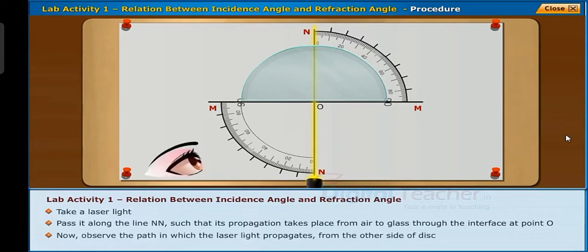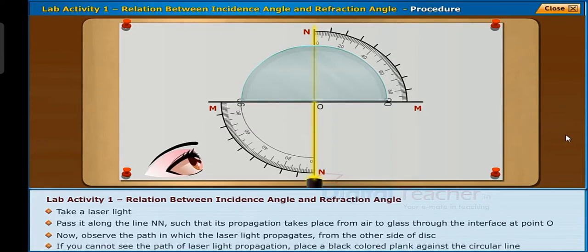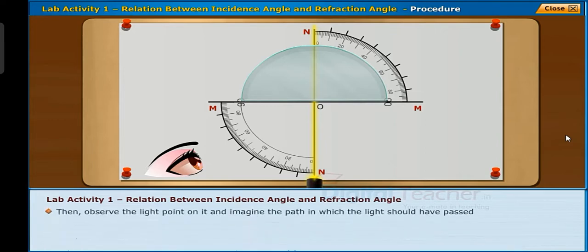Now observe the path in which the laser light propagates from the other side of the disk. If you cannot see the path of laser light propagation, place a black colored plank against the circular line, then observe the light point on it and imagine the path in which the light should have passed.